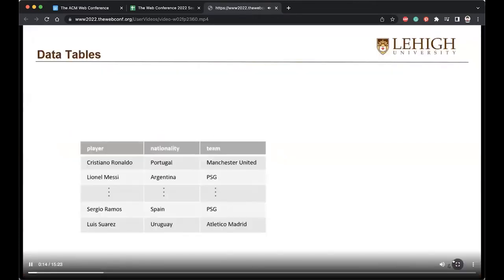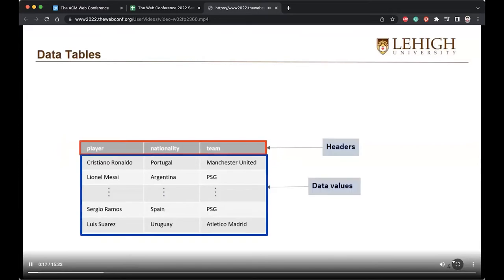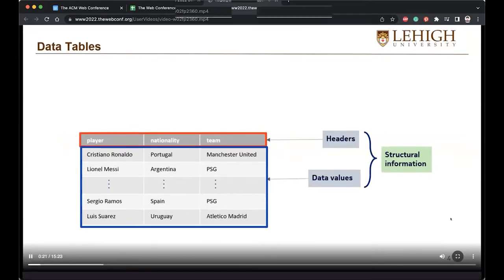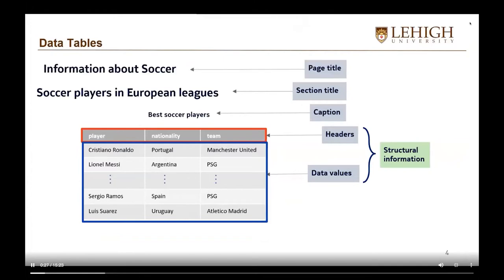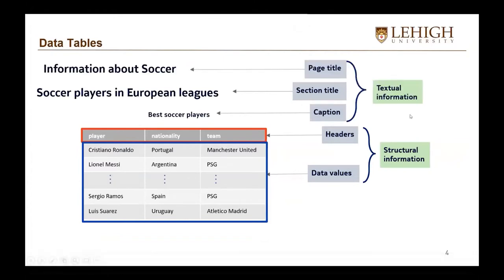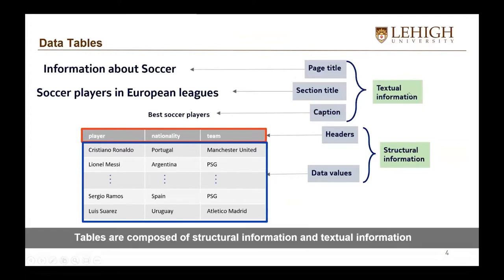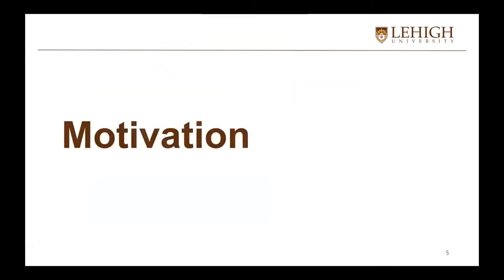A data table is composed of data values and headers, which constitute the structural information. The table is also associated with the caption, section title, and page title, which denote the textual information. So we can say that tables are composed of structural information and textual information.